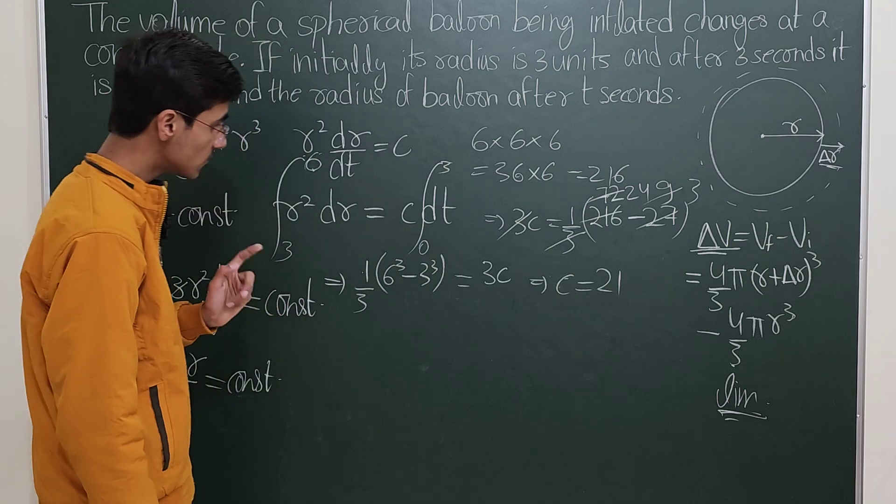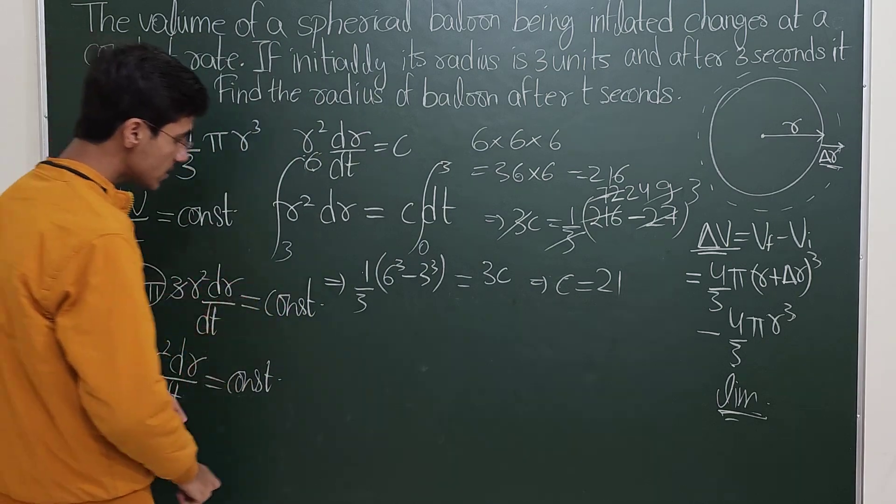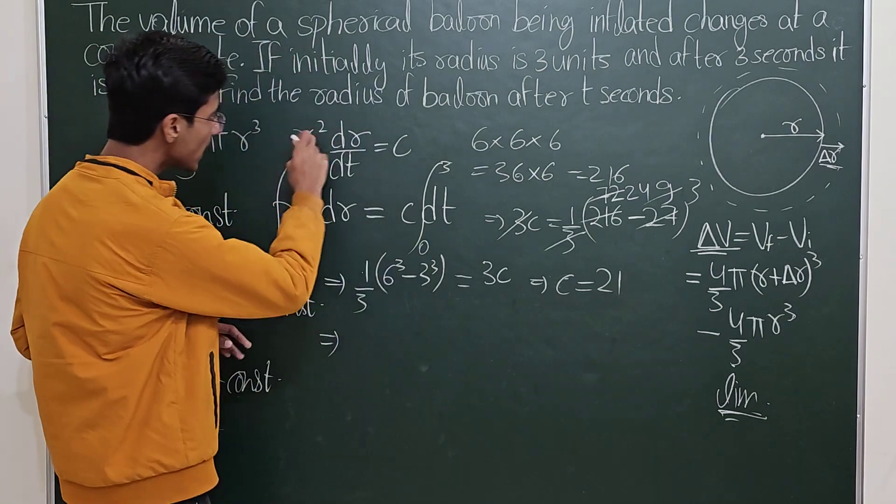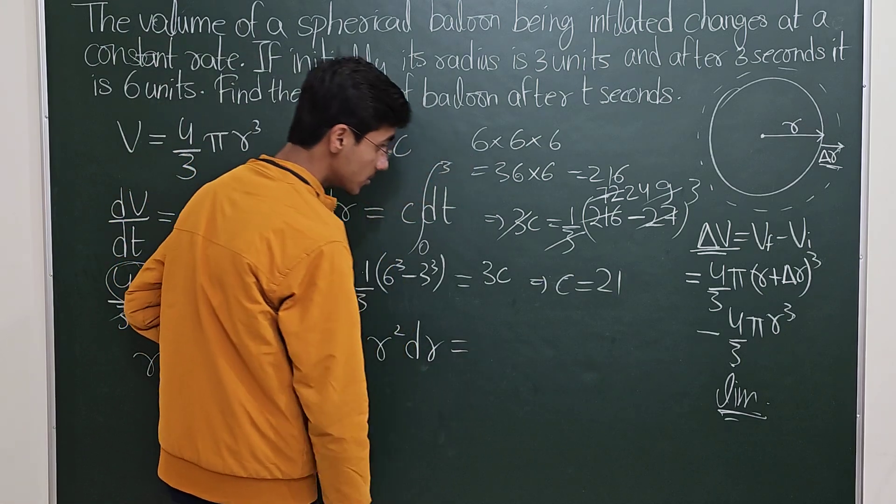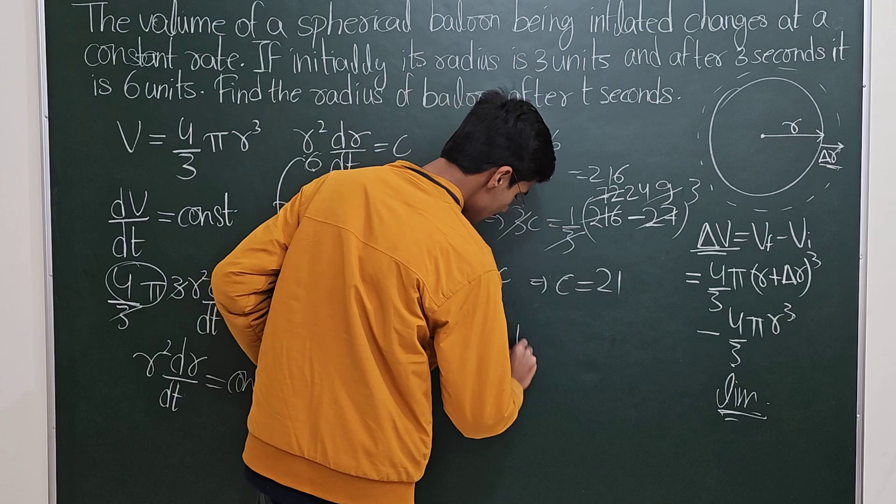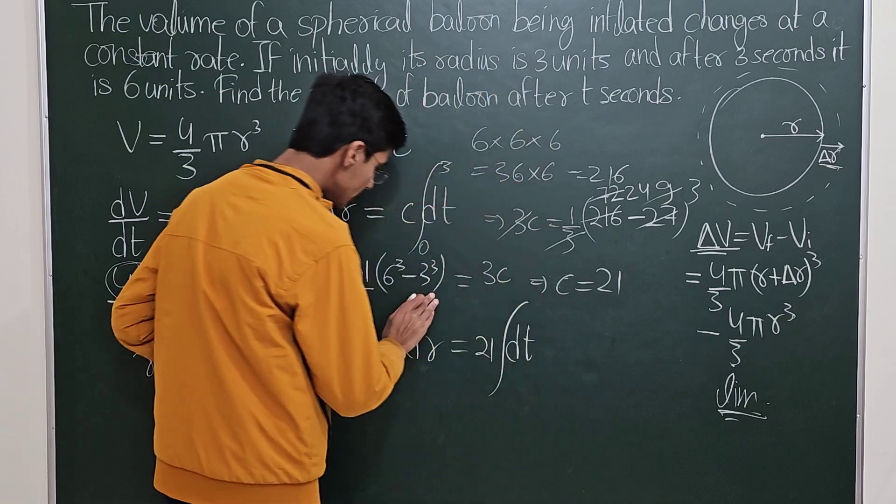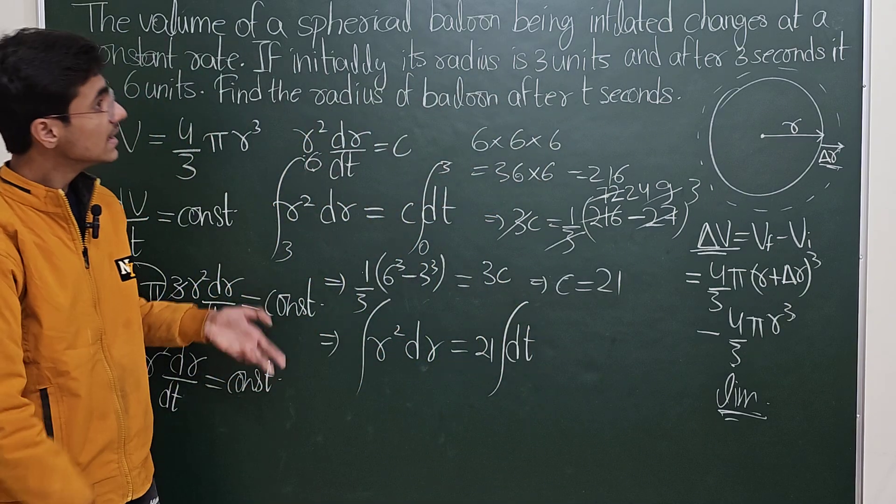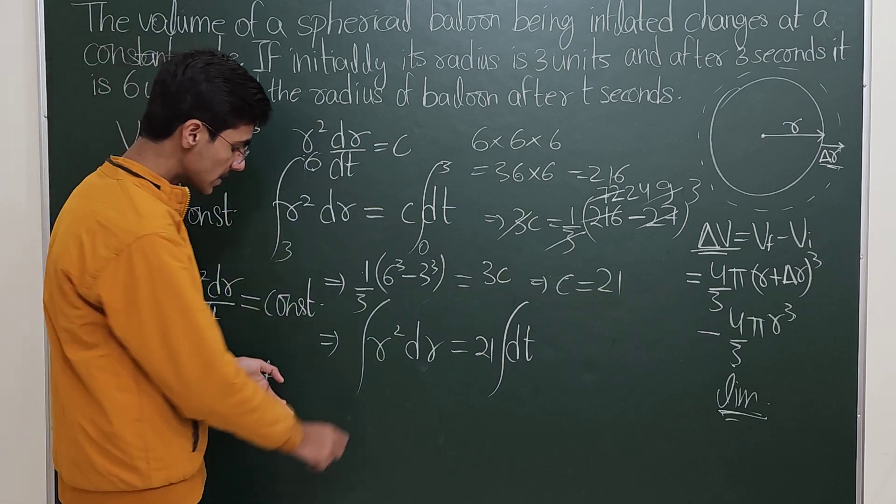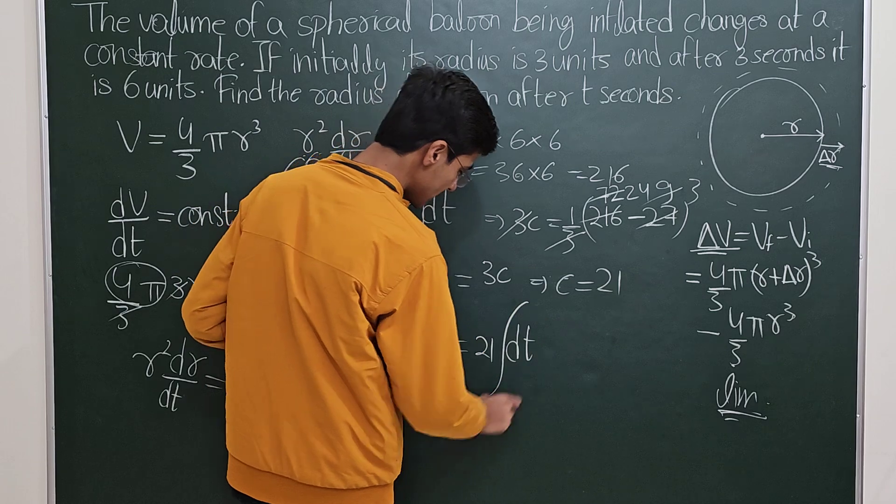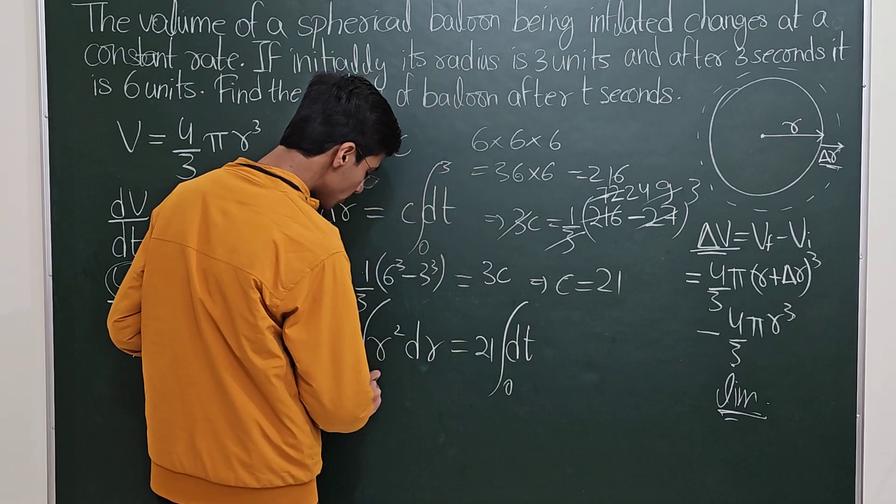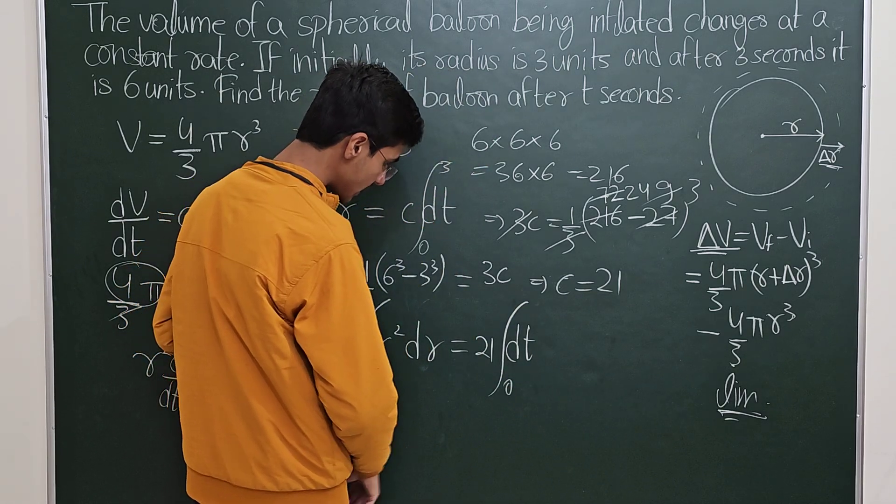Once you have knowledge of this constant, you again write this equation and you say that r² dr is now equal to 21 times dt. Now you integrate with your t and r as variables, where you put limits. Upper limits in this case, so t=0 you are again going to say that this was 3, and at some time t it is going to be something like r.